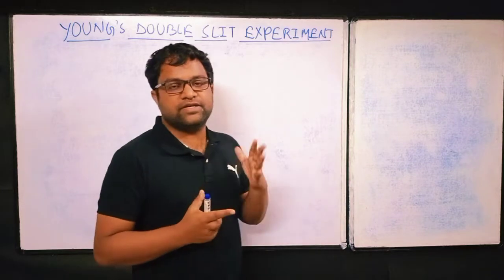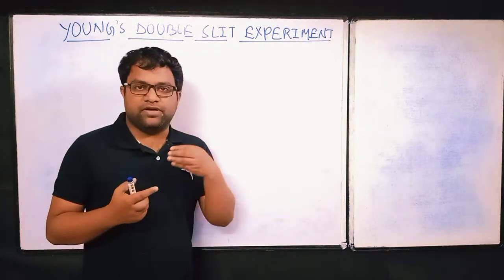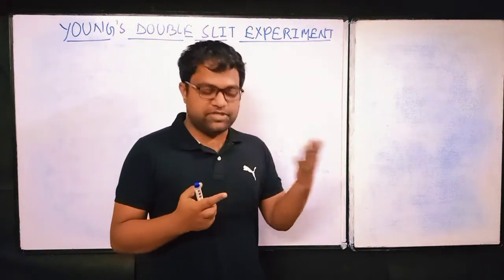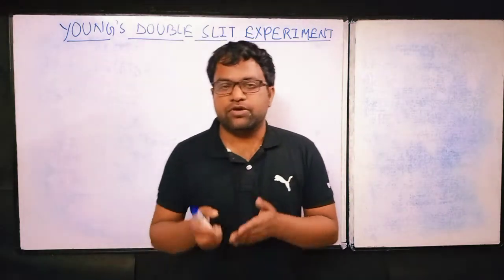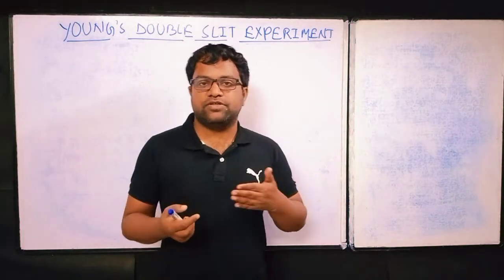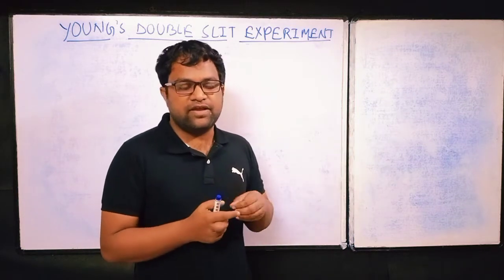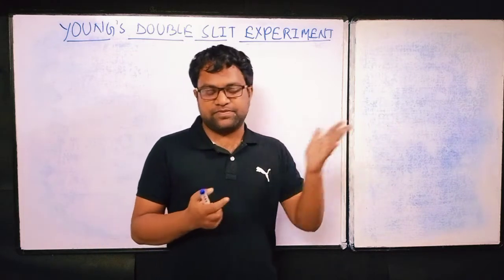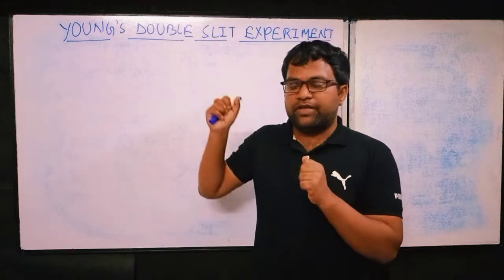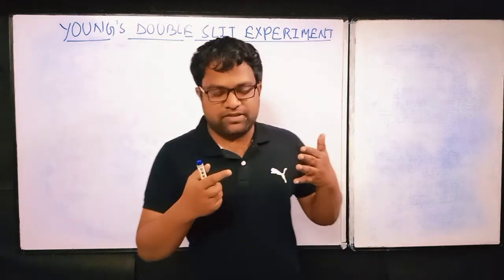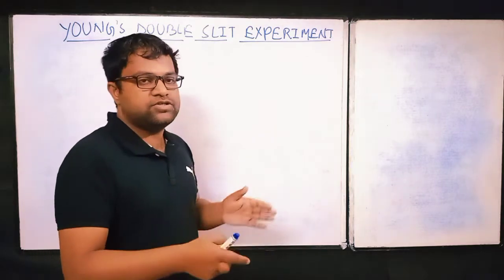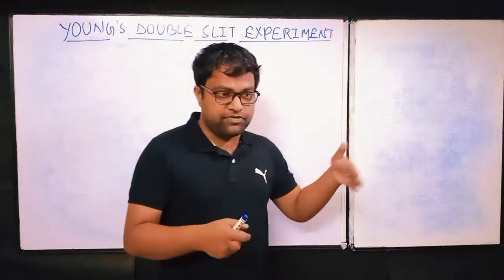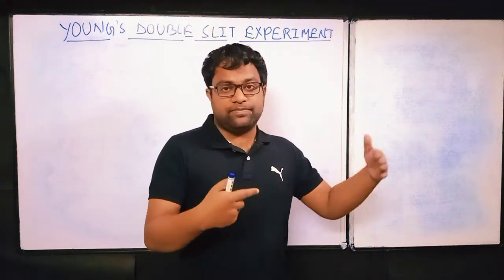Previously, it was believed that light travels in a straight line, like rays. Ray optics or geometrical optics — all the theories of reflection and refraction — were established on the basis that light travels in a straight line and behaves like particles or rays. When Young established his experimental setup, he showed that light is actually behaving like a wave, exhibiting an interference pattern with maxima and minima.